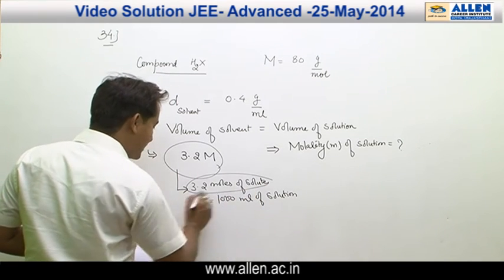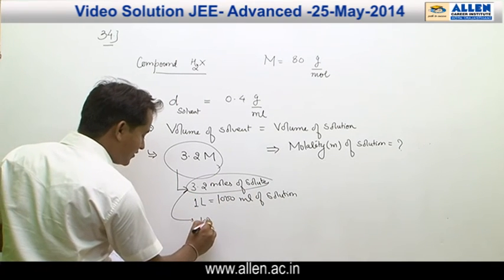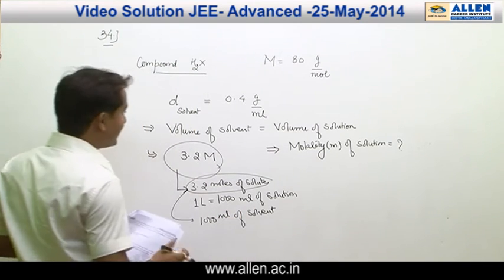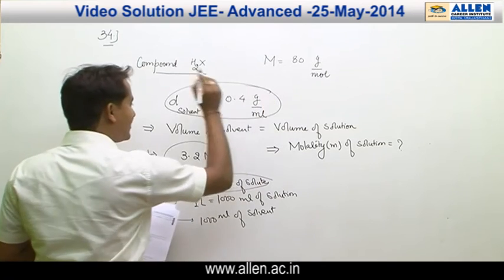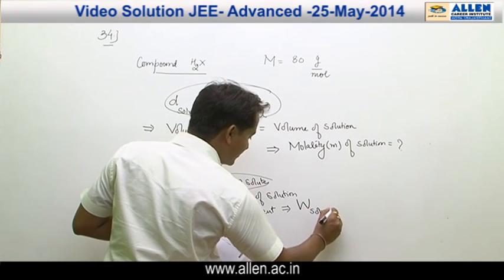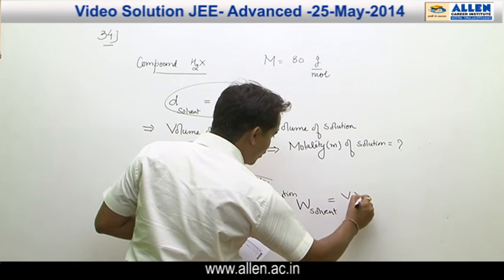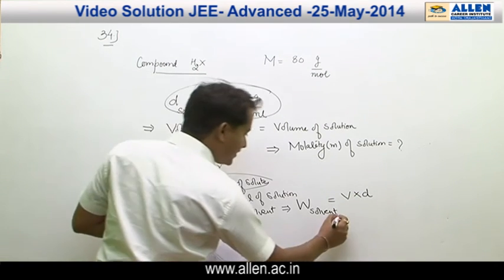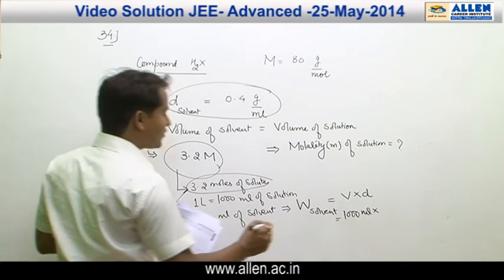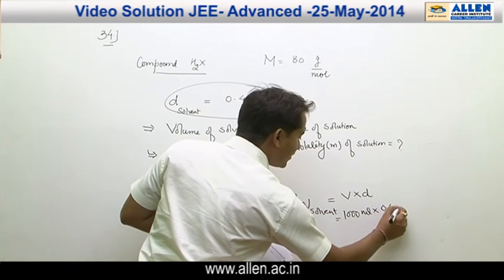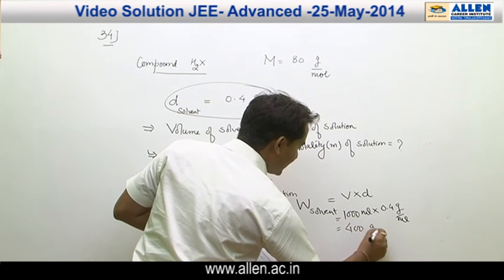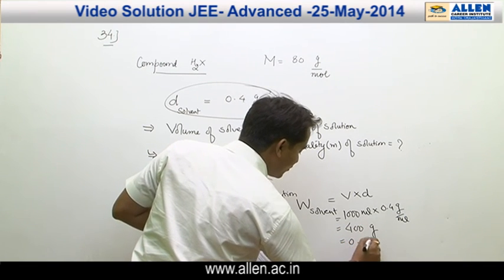That means 3.2 moles of solute is present in 1000 ml of solvent. Since density of solvent is given, therefore mass of solvent is equal to volume of solvent times density of solvent. Volume of solvent is 1000 ml, density is 0.4 gram per ml, which is equal to 400 gram or 0.4 kilogram.